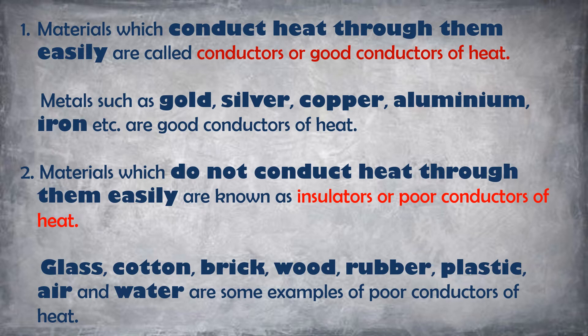Materials which do not conduct heat through them easily are known as insulators or poor conductors of heat. Glass, cotton, brick, wood, rubber, plastic, air, and water are some examples of poor conductors of heat.